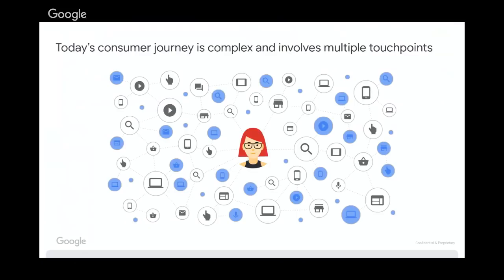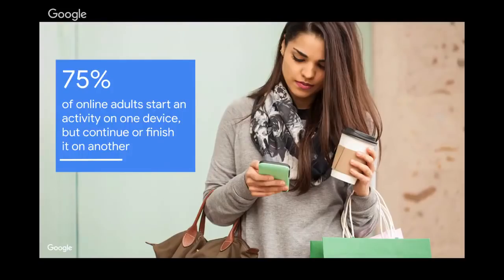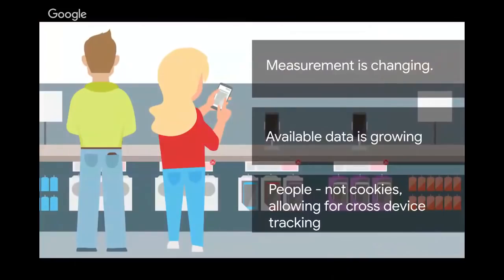The simple linear journey of our customers has changed. Today's consumer enjoys a very rich journey both online and offline with the ability to browse anywhere, on any device, anytime. This leads to customers engaging with your business in multiple different ways, and in addition to this the digital sphere is changing quite rapidly. We're seeing more and more search traffic coming from mobile. In fact, data shows that 75% of online adults begin an activity on one device but continue or finish it on another. So we now have access to more valuable data than we've ever had before, which really helps us to get a full picture of how our customers interact with our business.